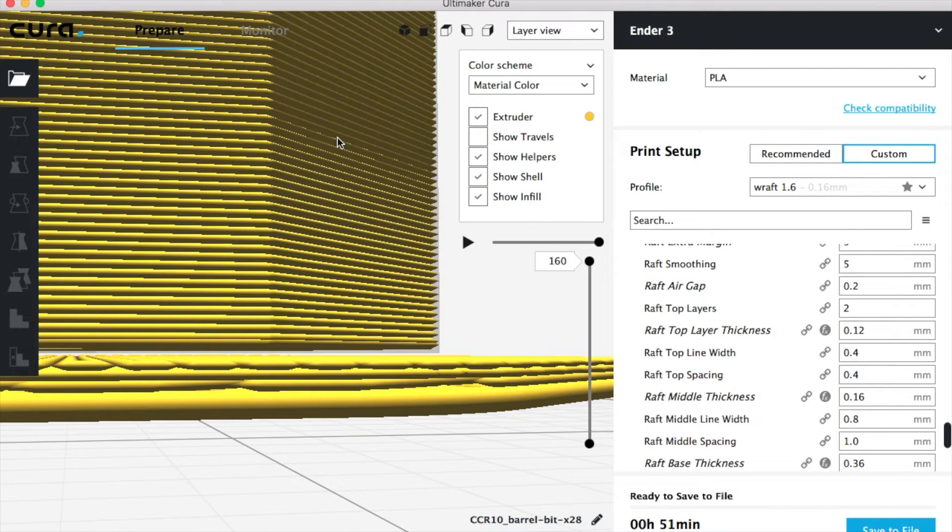Once you have the model imported, you'll notice here when I go into layer view right up here, this is your raft, that's your model. This is the gap or the air gap that we were talking about right here. So this is what you want to see on your layer view. So once we have that going, we're going to go ahead and get this printed, and once it's printed I'll show you what the results are.